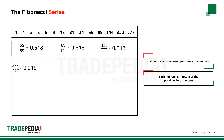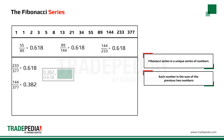What about if we were to leave one number in the middle empty and find the ratio between 144 and 377? We find the number 0.382. Now if we were to divide 0.382 by 0.618, again we would find 0.618.